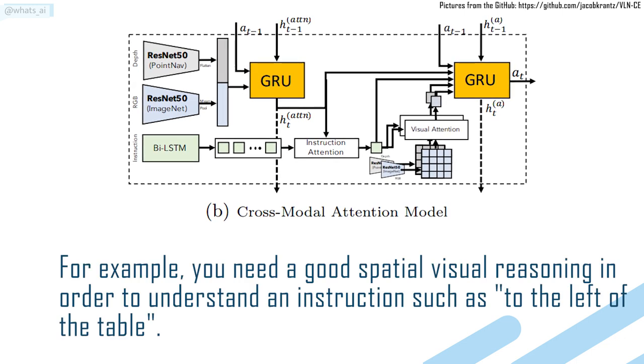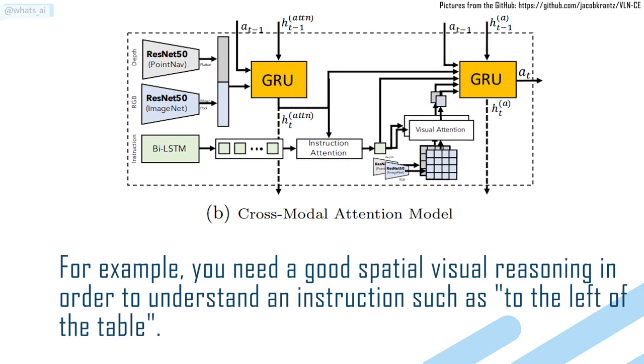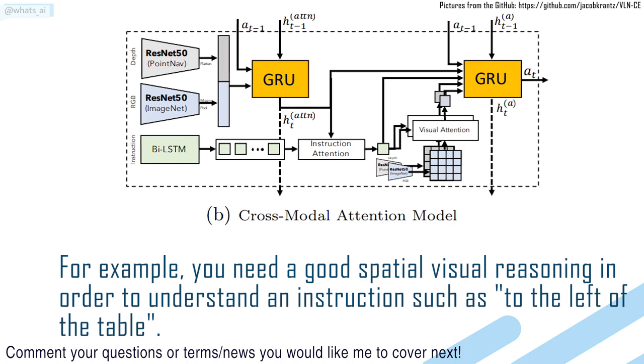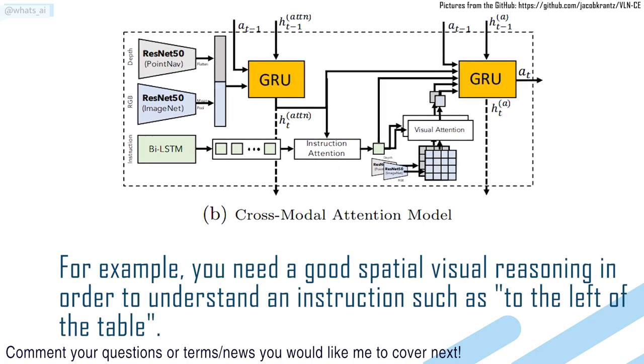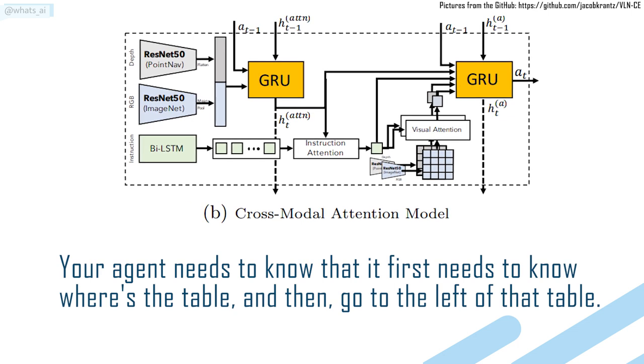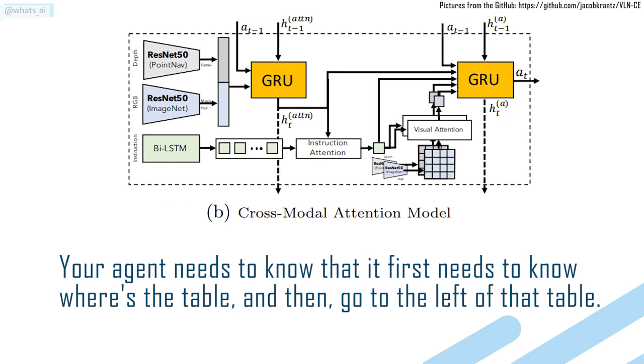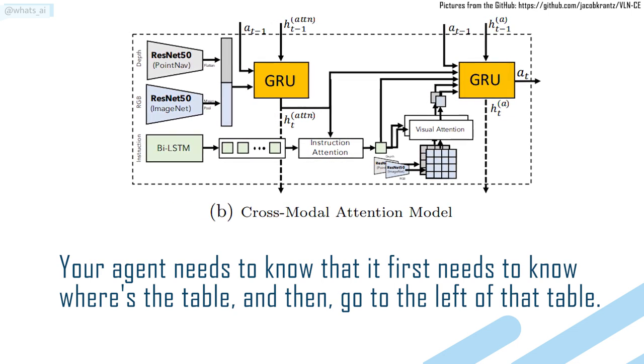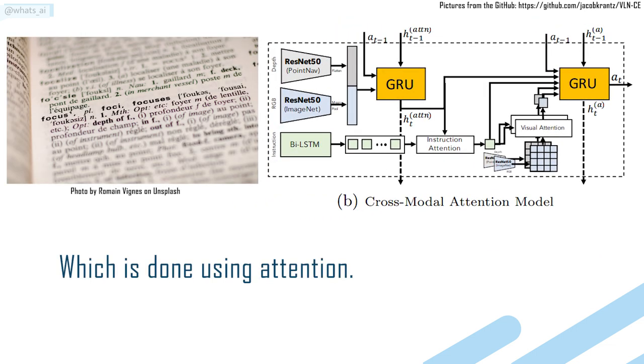For example, you need a good spatial visual reasoning in order to understand an instruction such as to the left of the table. Your agent needs to know that it first needs to know where's the table, and then go to the left of that table, which is done using attention.